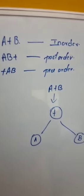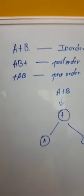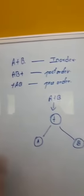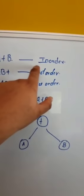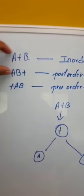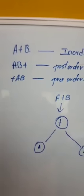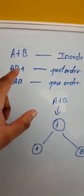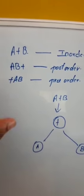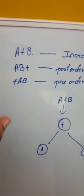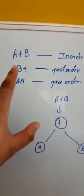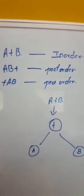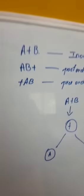Today we are going to study in-order, post-order, and pre-order expressions. In-order is simply written as 'a plus b' — operands and operator in natural order. Post-order writes the operands first and the operator later, so 'a b plus'. Pre-order places the operator first, giving 'plus a b'. These three formats differ only in where the operator appears relative to the operands.